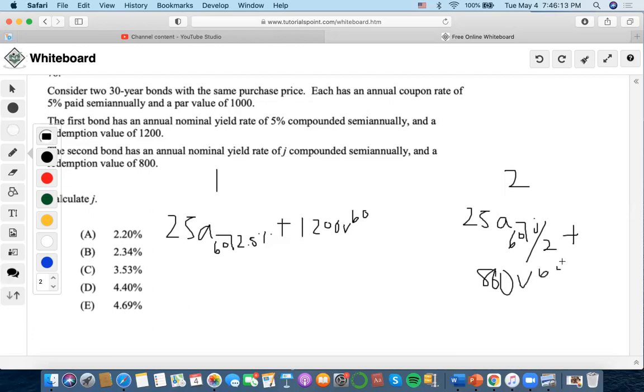Now we want to calculate j, right? So let's first calculate this. We can use the TVM calculator because that $25 is the payment, 60 as the number of years, 2.5 is the interest rate, $1200 as the future value. Compute present value.